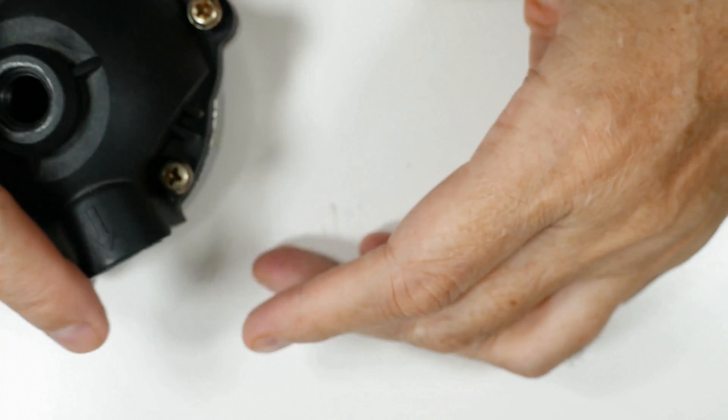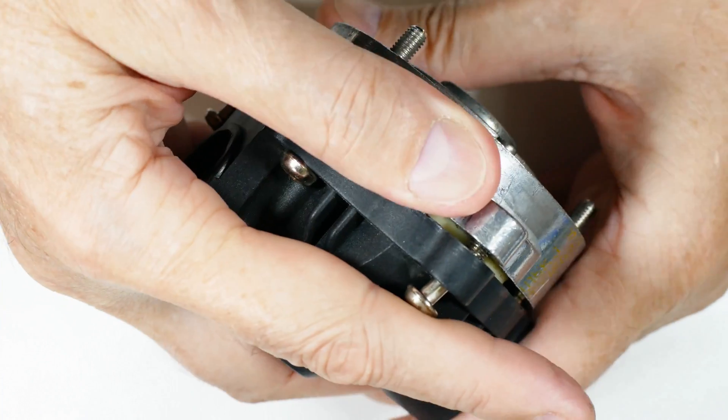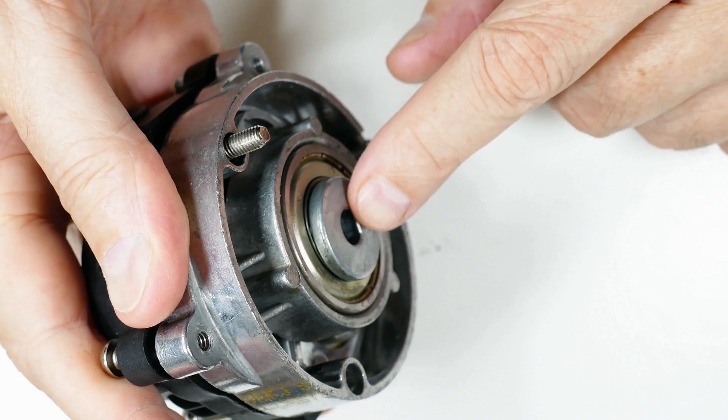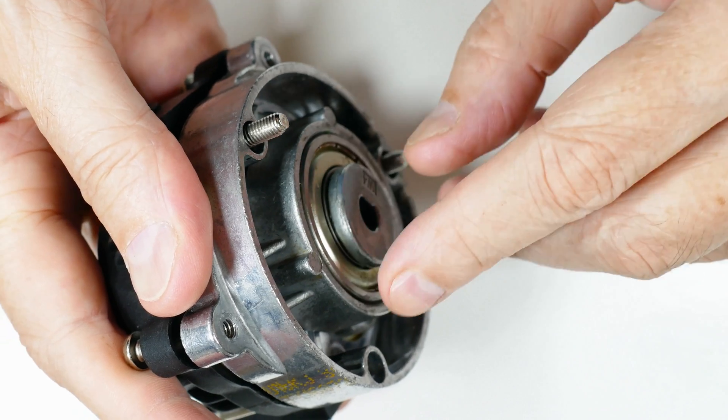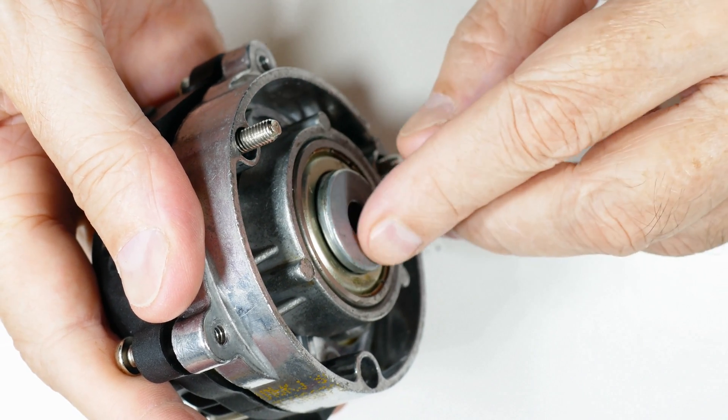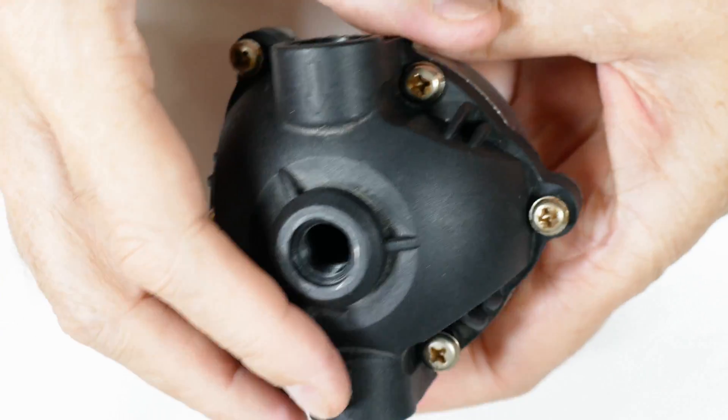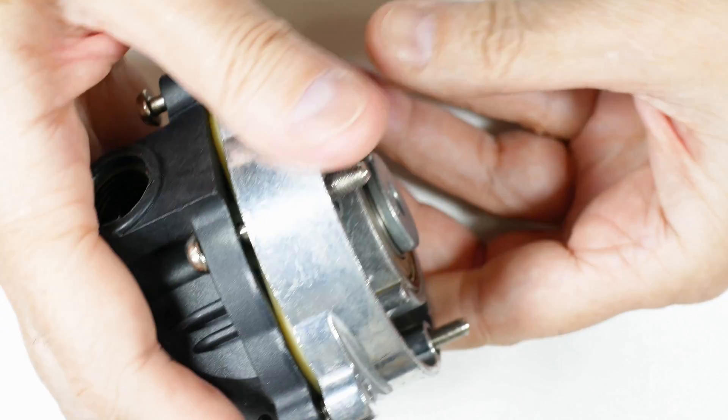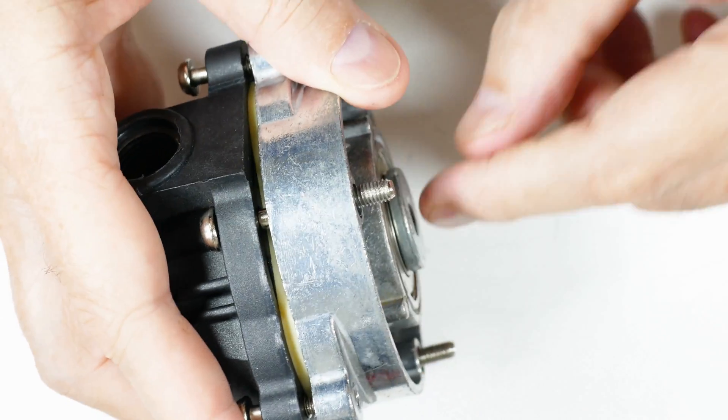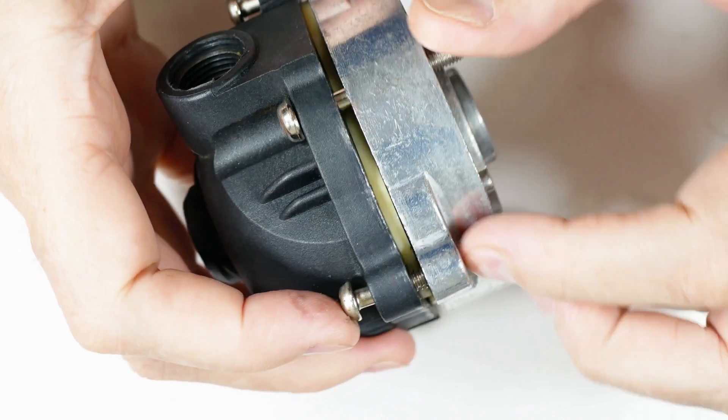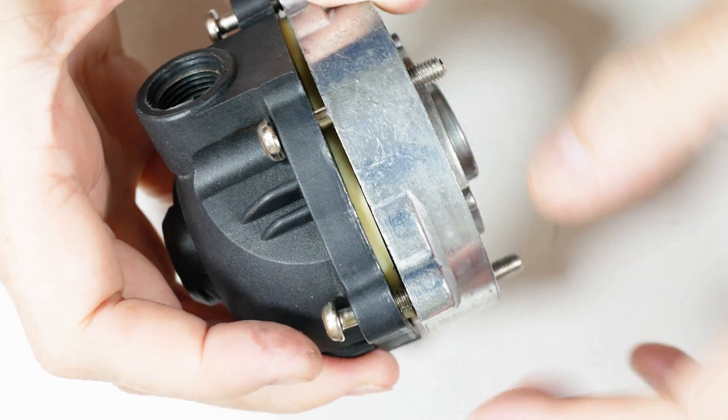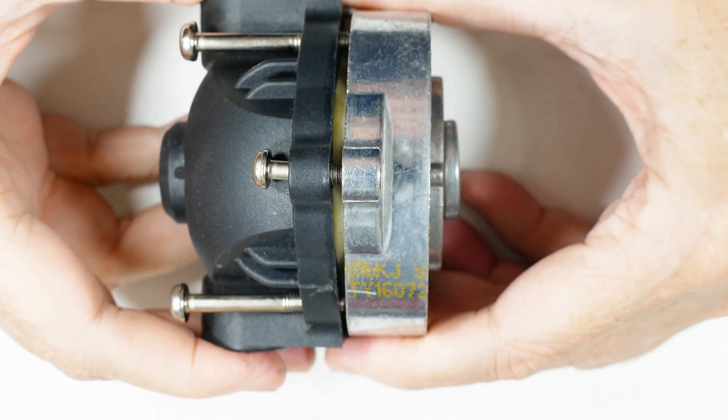We'll set this aside till later. The flat joins up with this part of the pump right there - you can see the flat moving around. There are six screws: three of them long that drive down into the motor case, and three short ones that just hold the top half of the case to the bottom half.